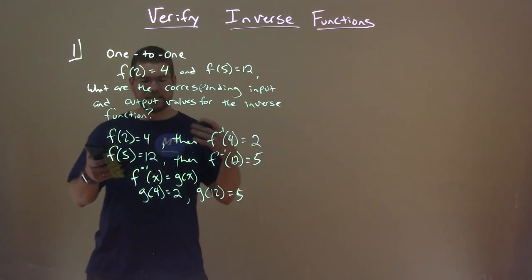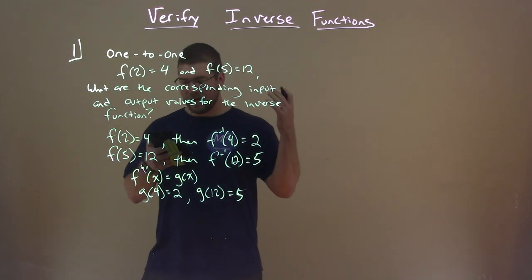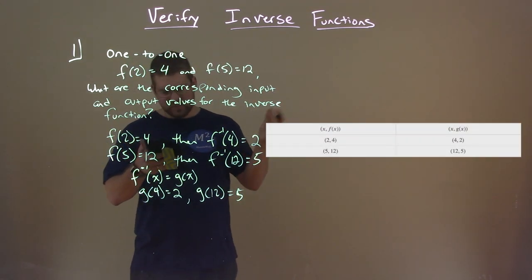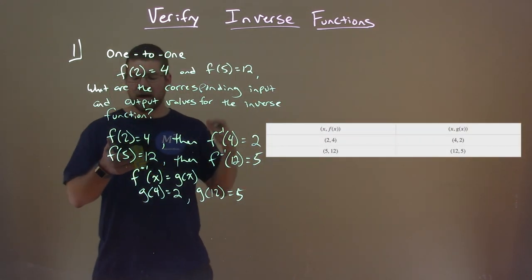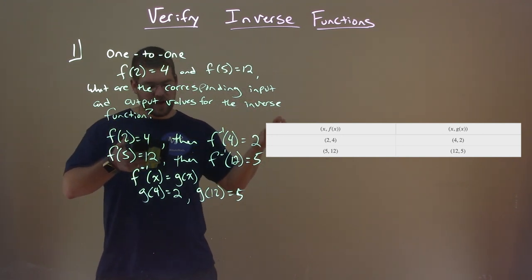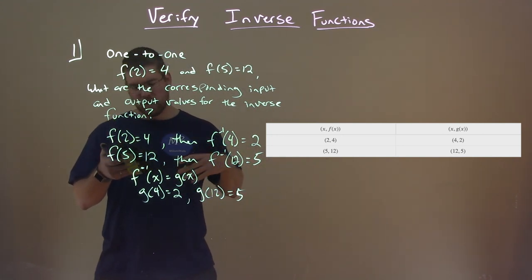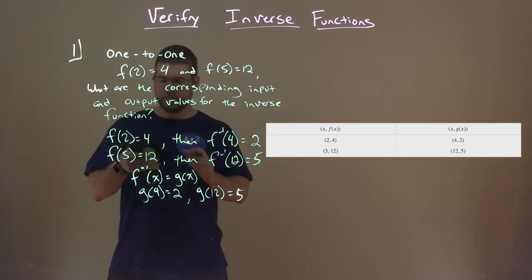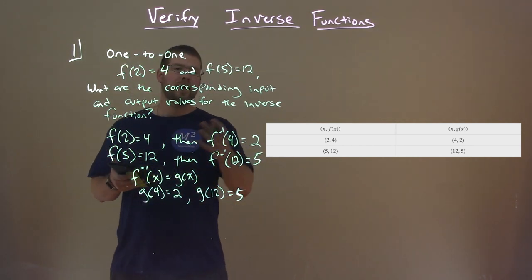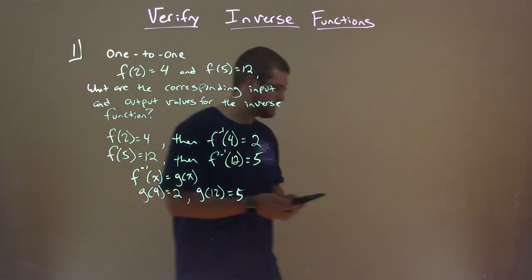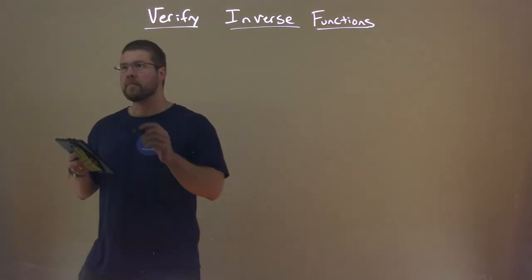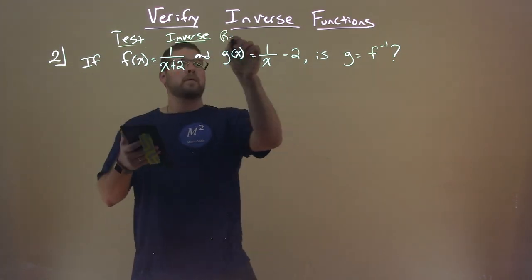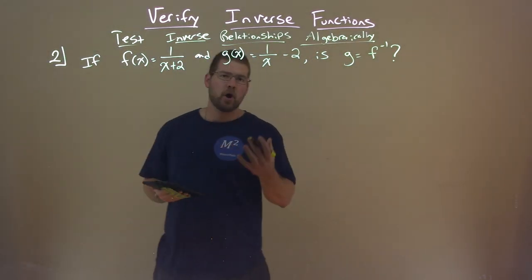And we can see that coordination on the table right here with our input-outputs, x and f of x, and x and g of x. We can see 2, 4, and then 4, 2, and 5, 12, and 12, 5. Let me erase this and we'll go to the next part.